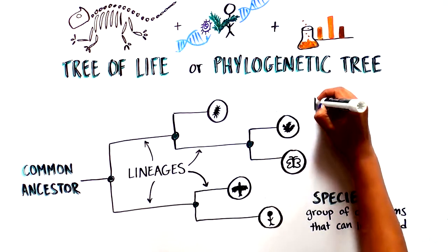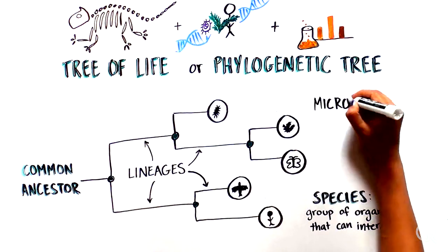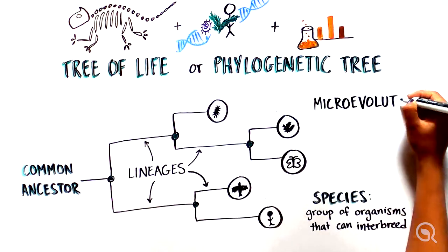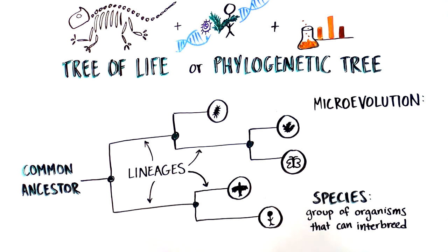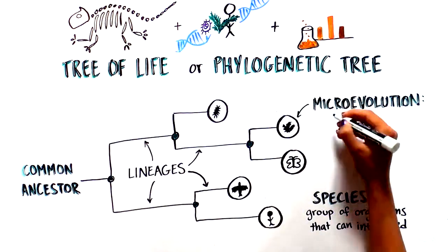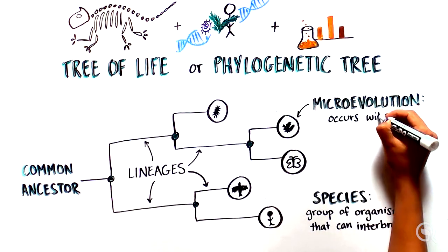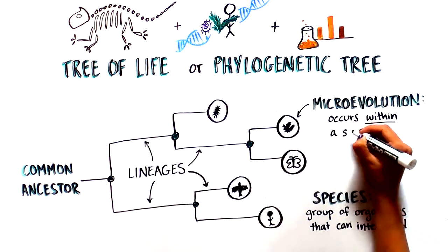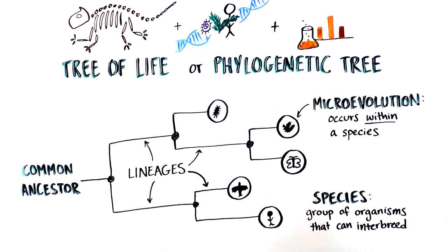A species refers to a group of organisms that can interbreed with each other. Evolution that happens at the population level, meaning within an individual species, is referred to as microevolution. In contrast, macroevolution is used to describe evolution at or above the individual species level.